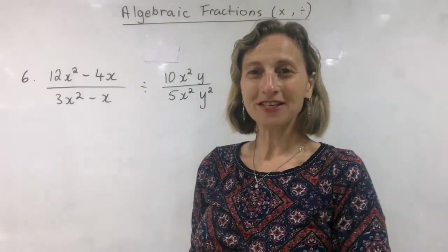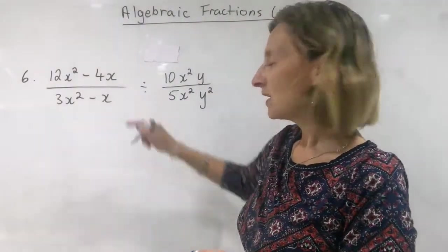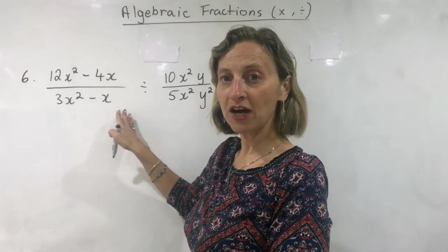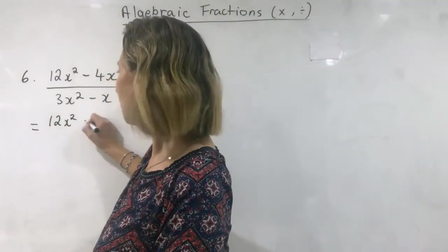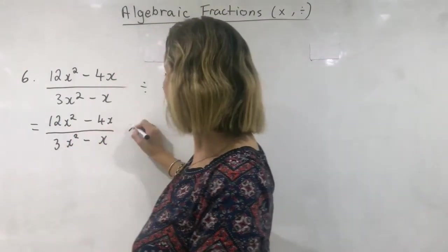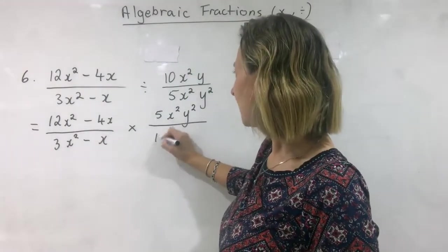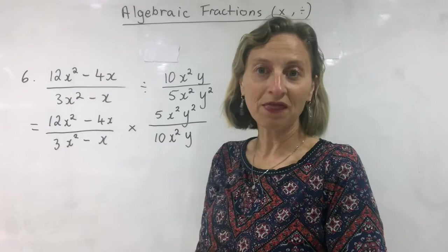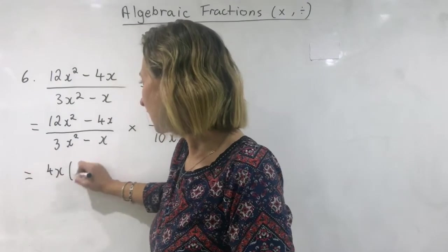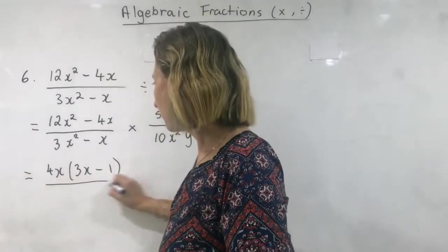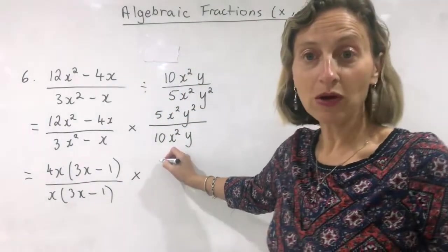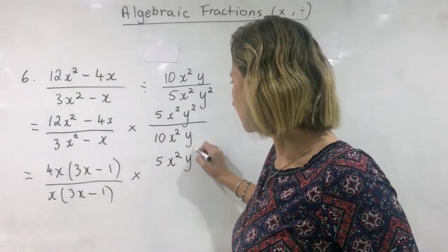To end on a maybe easier note, let's have a look at number six — again, division of two algebraic fractions. I'm going to change the divide to a times first. I'm not going to factorise at the same time because I like to do one thing per line of working. I just find you're less likely to make a mistake if you do one thing at a time. I can now factorise: here I can take out a 4x, and on the bottom I can take out an x. Over here there's only one term on the top and one on the bottom, so there's not much to do.